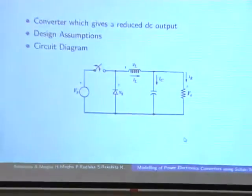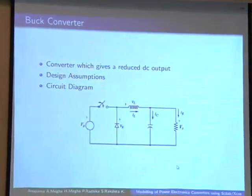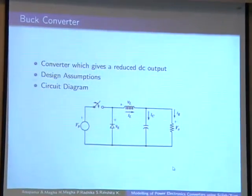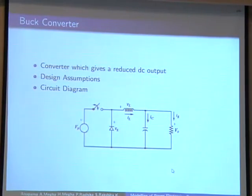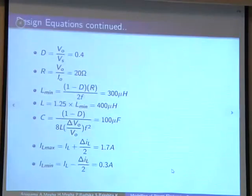This first one is the buck converter. As we know, it gives a reduced output. There are some design assumptions - that is, inductor current should be always continuous. This is what the circuit diagram is. We have modelled the XCOS model using some design equations.